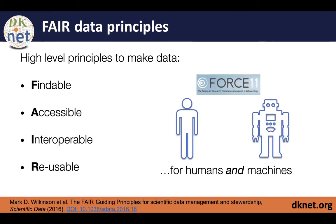The FAIR data principles are these four high-level principles to ensure that once you publish your resource, other users can actually find it, that the data is accessible in a usable form, and that people wanting to take data from different repositories can use that data with other data — doing new analyses or larger-scale analyses. And this is not just for humans but also machines. For example, Google goes out and searches for datasets across different repositories, depending on what type of markup these repositories use.